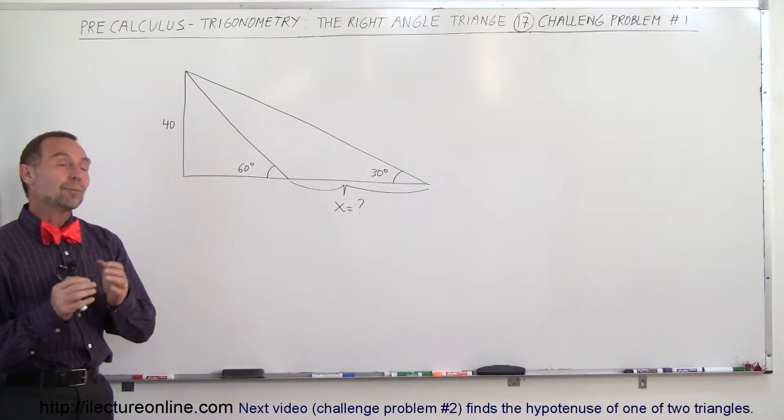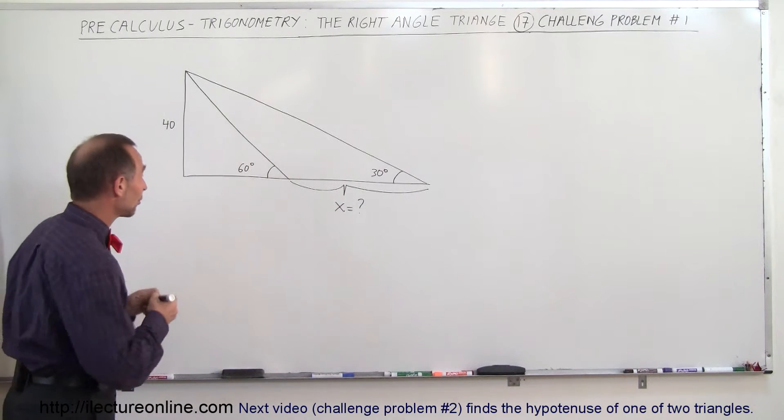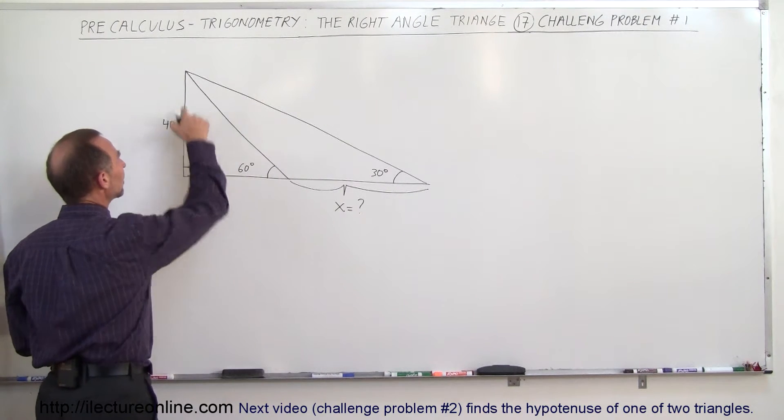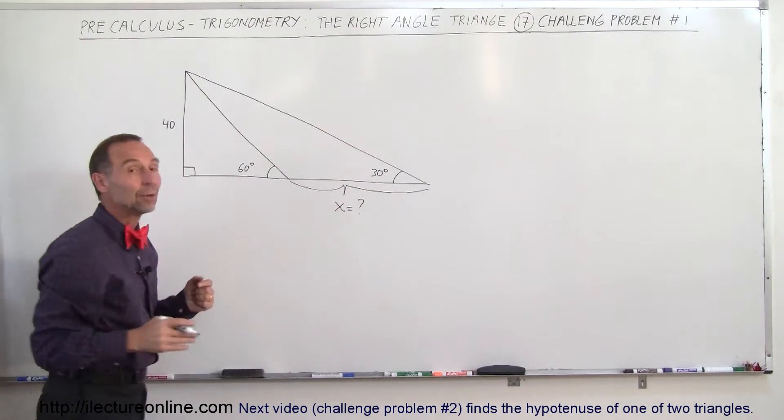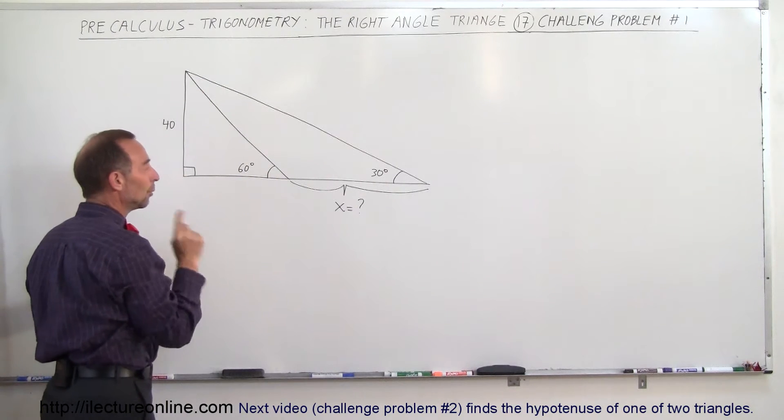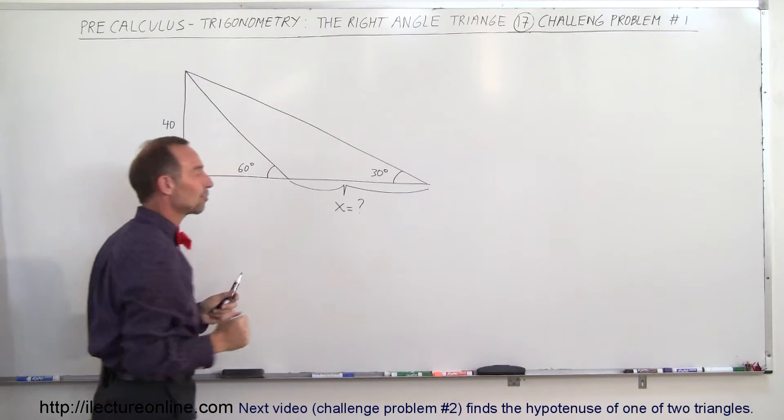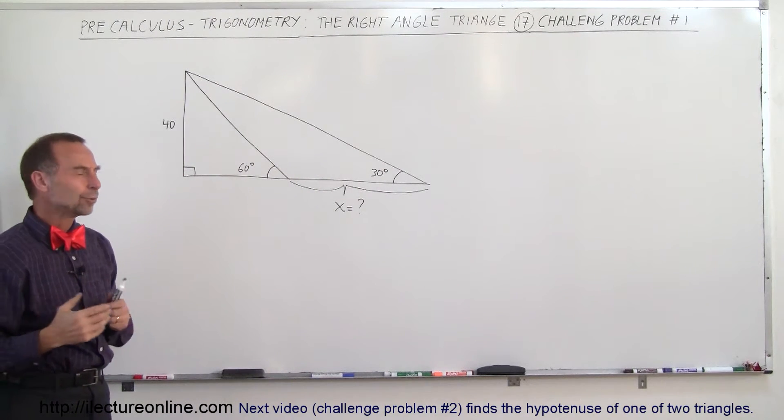Welcome to ElectronLine, and now a more challenging problem dealing with right triangles. And yes, there is a right triangle here. If you consider this to be 90 degrees and you take the outside lines, that would then be a right triangle. And if you take the inside lines, you have another right triangle. What we're trying to find here is the length of this portion right here of the outside triangle. Let's call that length X. How do we go about doing that?